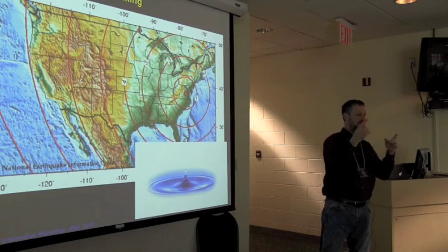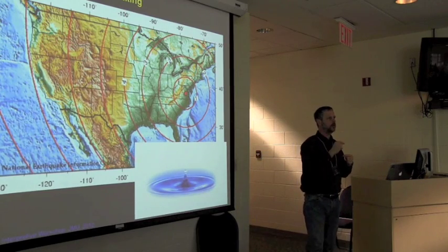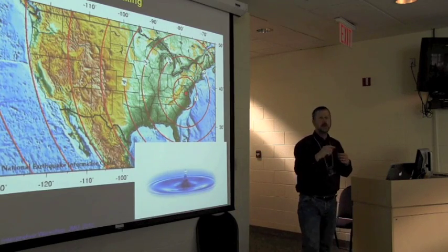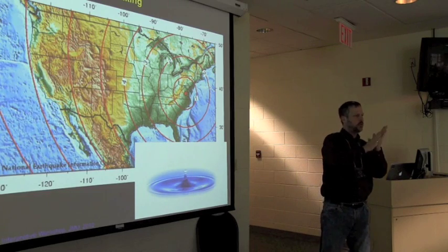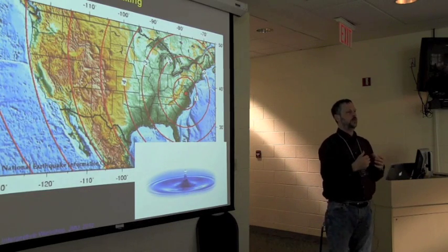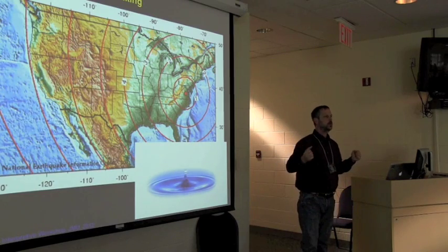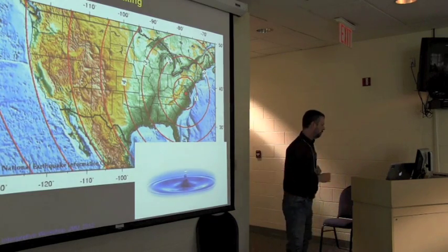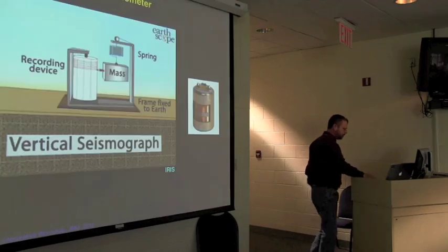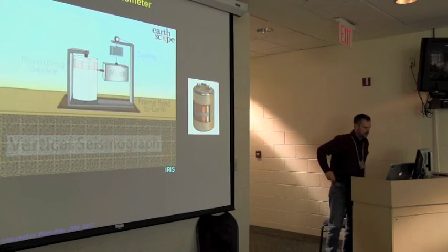So the earthquake is sort of two things: the sudden slip on a fault — in this case the fault was about eight kilometers by four kilometers — and the shaking that slip creates in the ground. That shaking is felt a long way away, spreading outwards from the source, and we record that on seismometers.